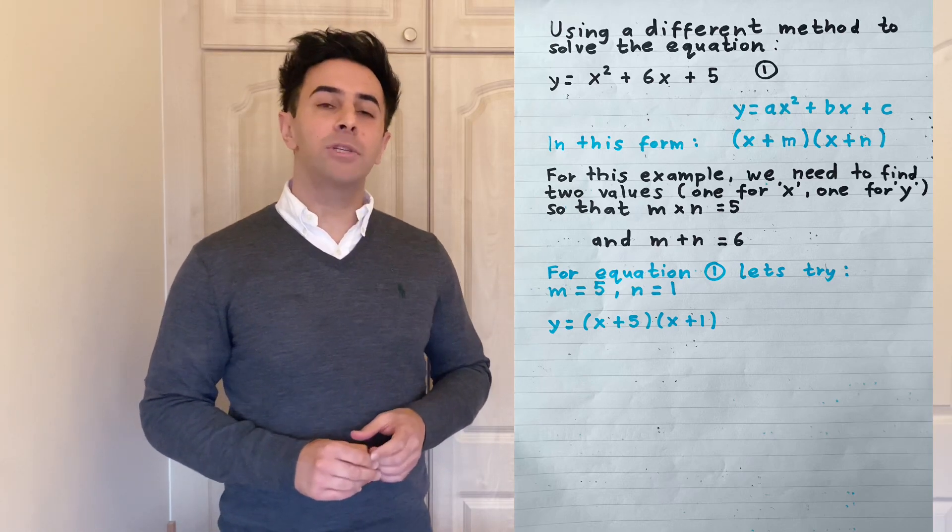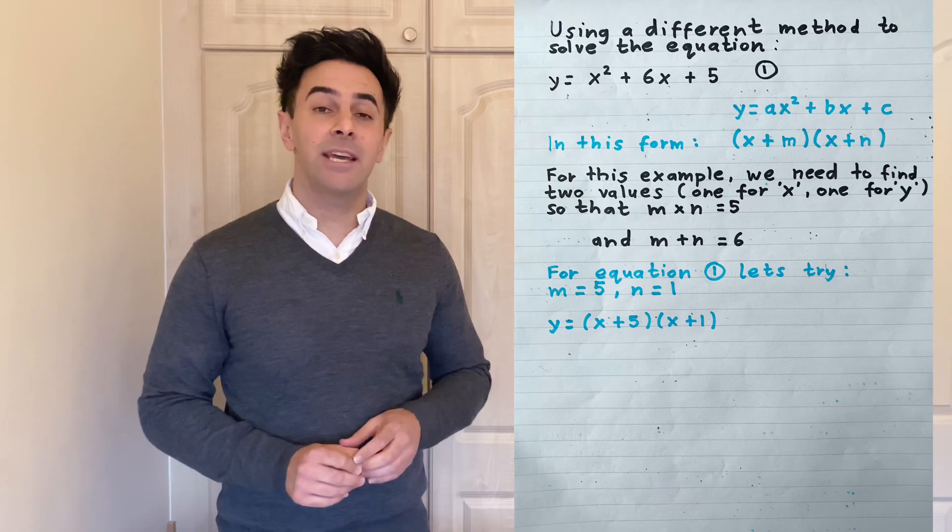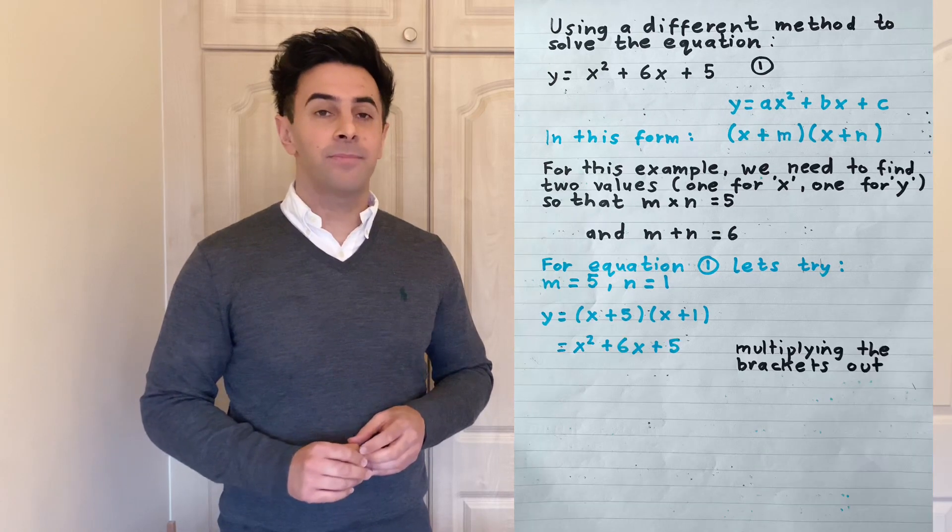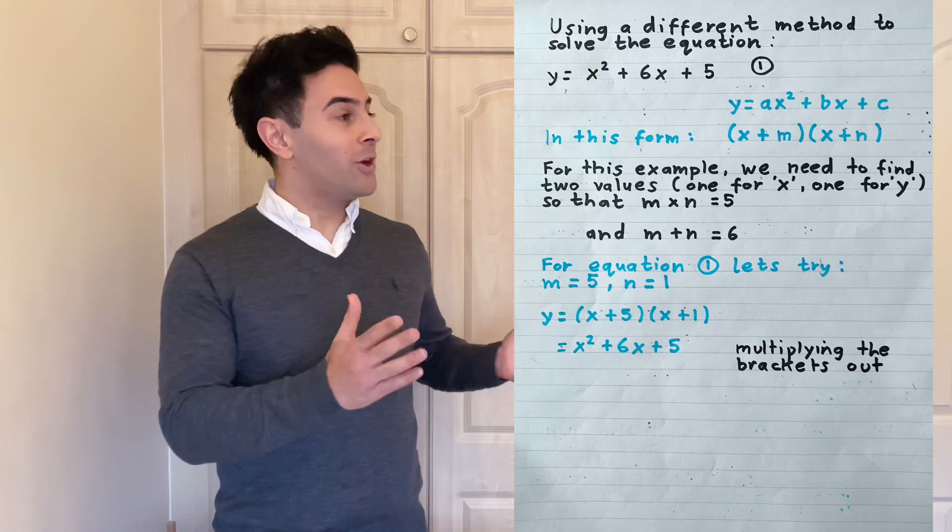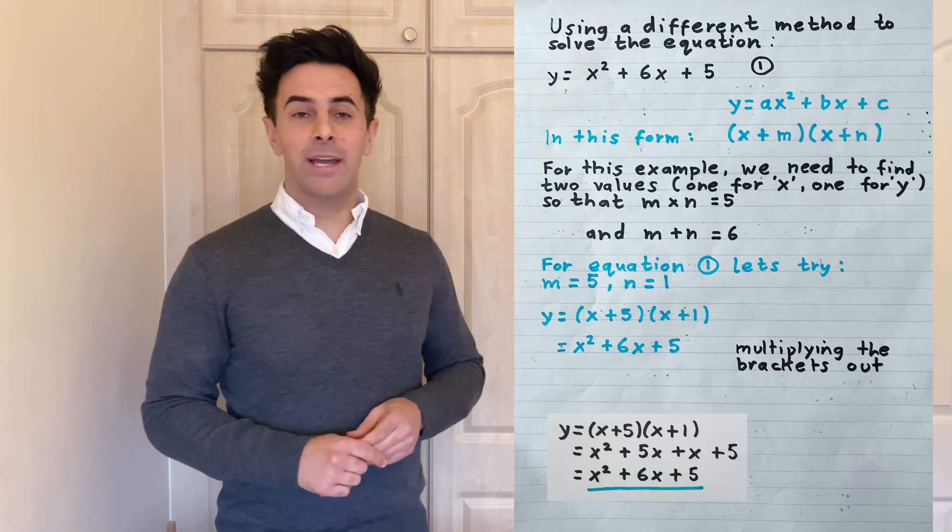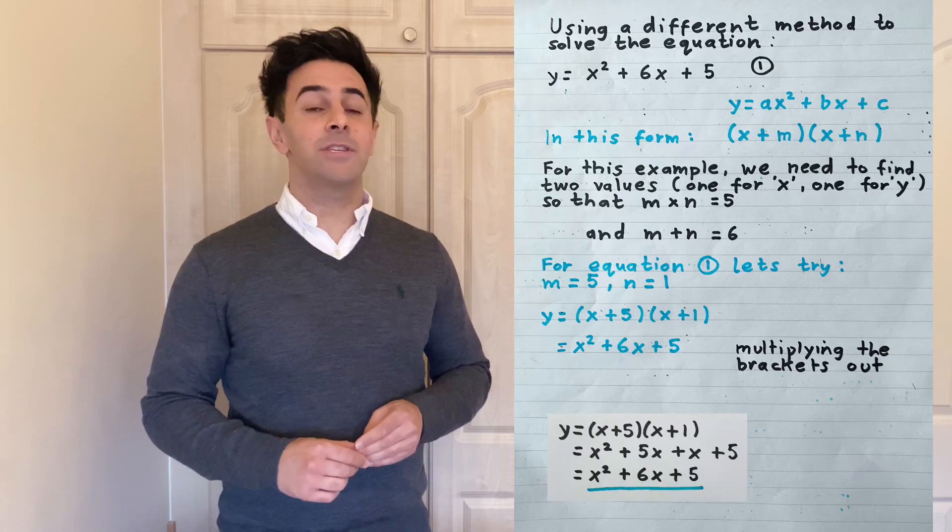We'll double check by multiplying the brackets out to see that this is the same as our original equation. And there you go, x squared plus 6x plus 5. So it's the same. So this has worked.